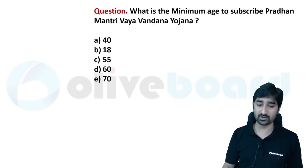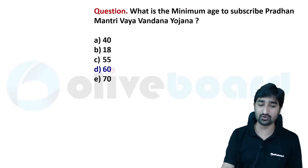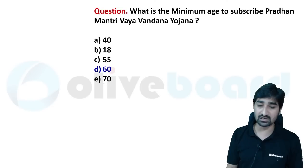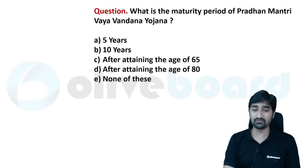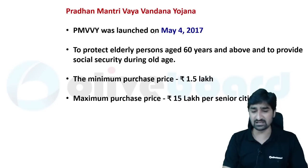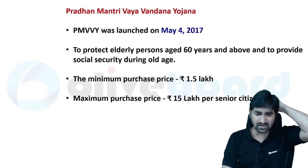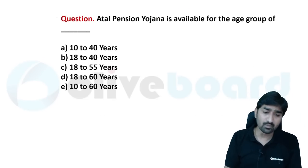Pradhan Mantri Vaya Vandana Yojana — the minimum age to subscribe is 60 years, with a maturity period of 10 years. You can skip Vaya Vandana for now, but Atal Pension Yojana is important.